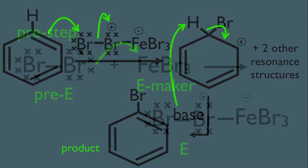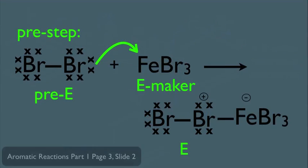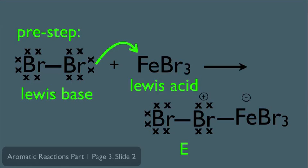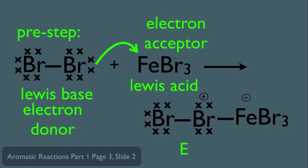But let's go back to the pre-step. I want to point something out. Notice your Br2 is acting as a Lewis base and your electrophile maker is acting as a Lewis acid. Lewis bases, by definition, are electron donors, and that's exactly what Br is doing, donating its electrons. And Lewis acids, by definition, are electron acceptors, and sure enough that Fe is accepting the electrons.